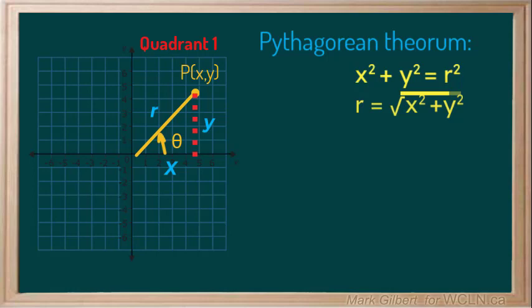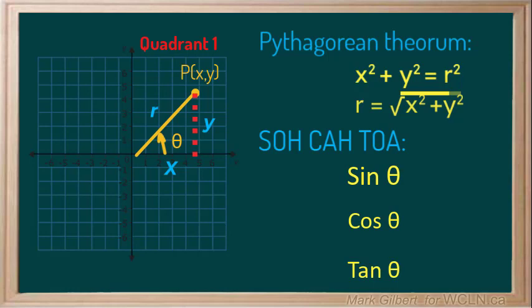Now recall all three trig ratios or use SOHCAHTOA to help you remember. We can use these ratios to define sine, cosine, and tangent of theta in terms of x, y, and r.